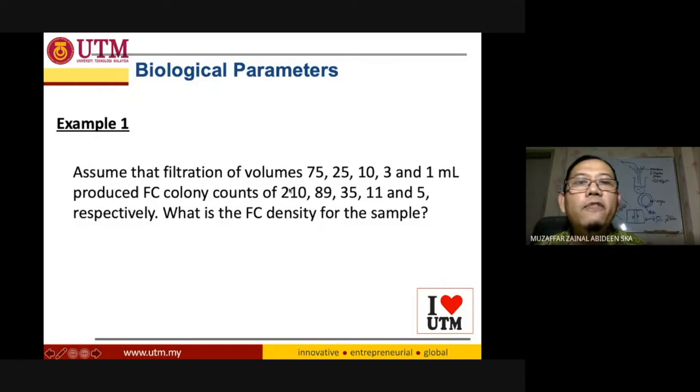So once they filter the 75 ml they obtain 210 number of colonies. Once this person filter a volume of 25 ml he or she obtained 89 number of colonies on the filter paper, on the membrane paper. And once this person filter 10 ml of sample they obtain 35 number of colonies, and that's also the case for 3 ml and 1 ml.